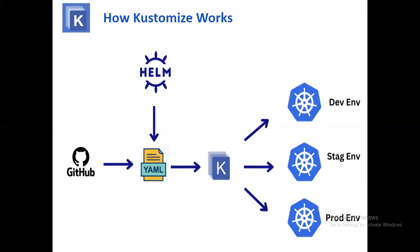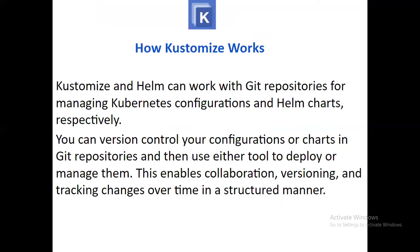Now let's look at how Kustomize works. You can see a diagram with YAML files, GitHub, Helm, and Kubernetes. You can version control your configuration or charts in Git repositories for managing Kubernetes configuration and Helm charts respectively. You can then use either tool to deploy or manage them, enabling configuration versioning and tracking changes over time in a structured manner.